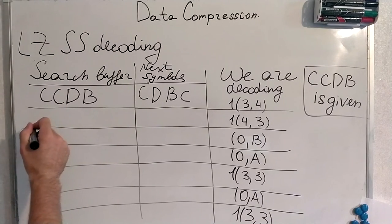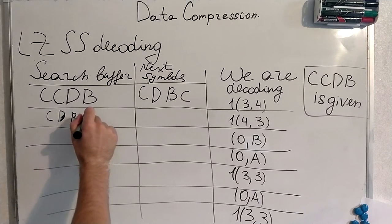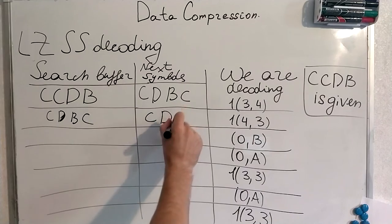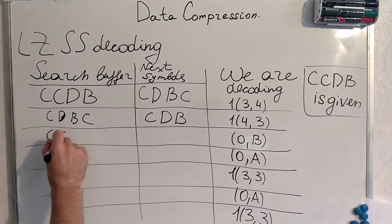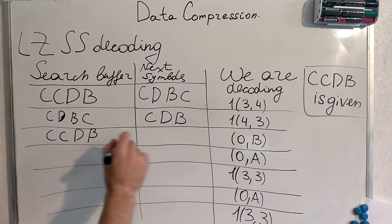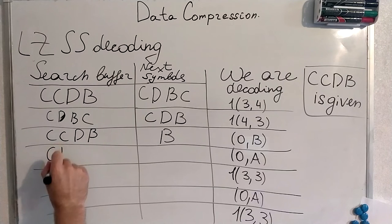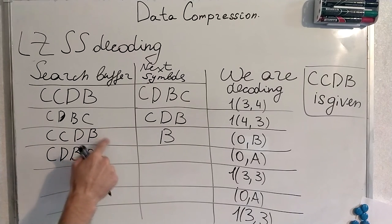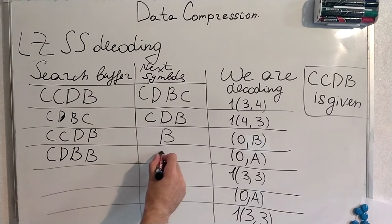We update our search buffer. It now will be CDBC. We apply that and produce new symbols CDB. We are decoding this. We update it once again. CCDB. We slide our window in such a manner and B comes here. Zero A, next symbol is A.